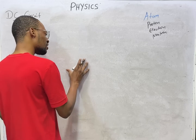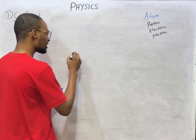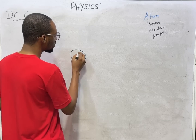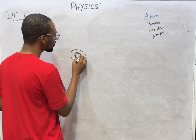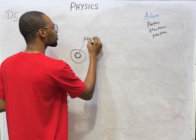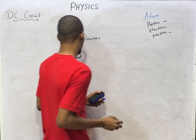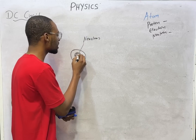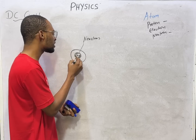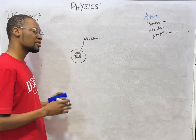Let's look at the structure of the atom diagrammatically. Drawing the atom, the inside is called the nucleus. Inside the nucleus is where we find the proton and the neutron. The proton is positively charged, and the neutron has no charge — it is neutral.